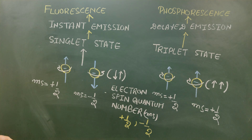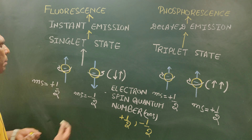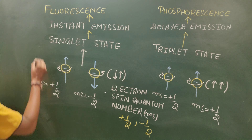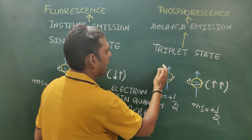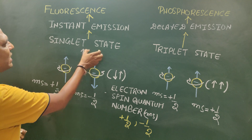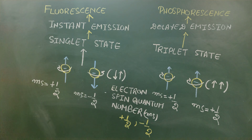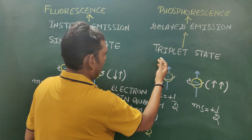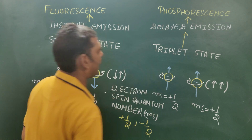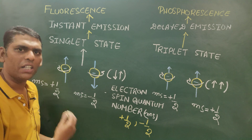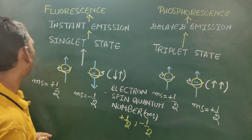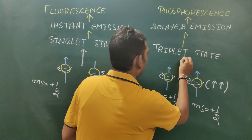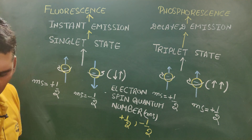The singlet state is a high energy state and is less stable, while the triplet state is a lower energy state and more stable. The stability and energy level of each state can be determined using a term called spin multiplicity. The formula for spin multiplicity is 2S + 1, where S is the total spin calculated as S = s1 + s2.